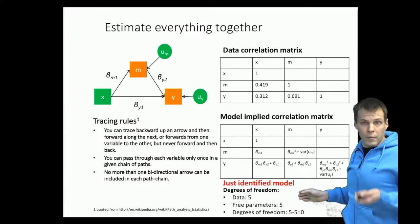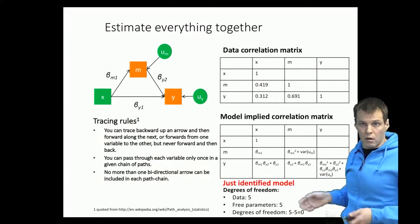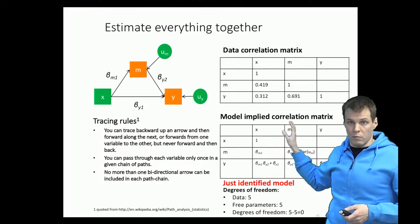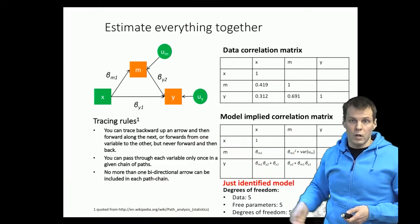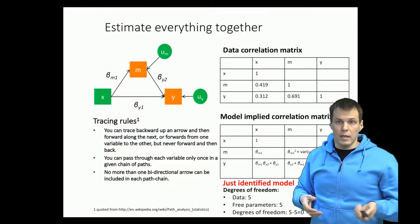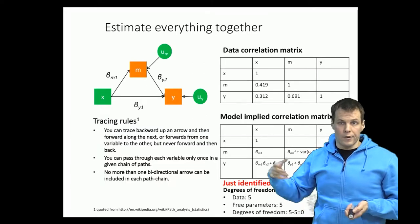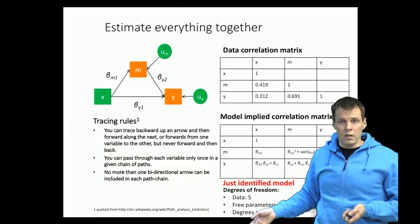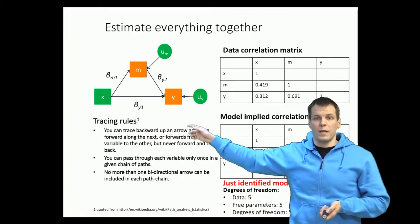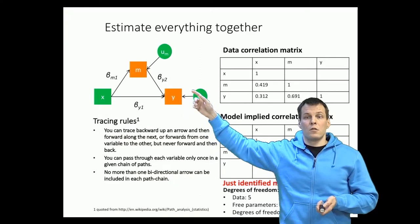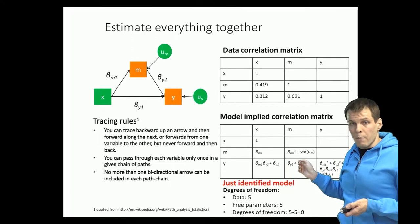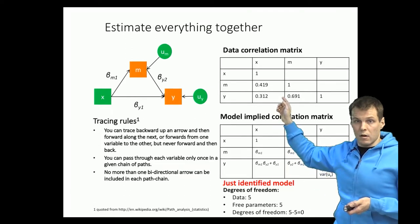Just-identified means that we can estimate the model, but we are using all the information from the data to do so and could not add anything more to the model. It also means the model will fit perfectly. We can find values of these variances and betas so that the model-implied correlation matrix matches exactly the data correlation matrix.